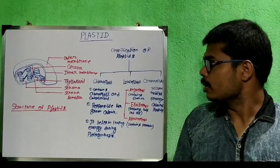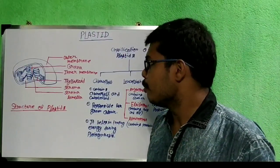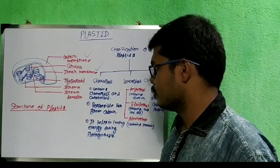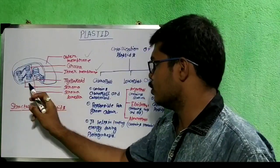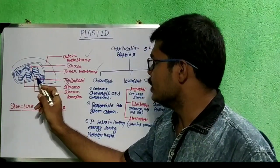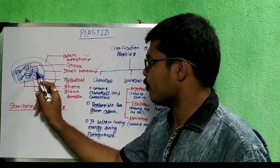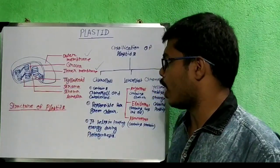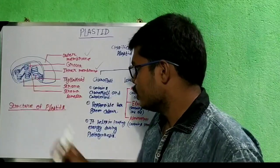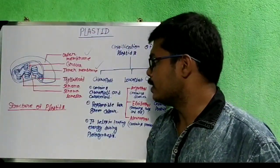Now I will discuss about the plastid. I have drawn a diagram of plastid. This plastid is a double membranous structure like mitochondria and nucleus. It has one outer membrane and another inner membrane. The place inside that membrane is known as stroma. In this stroma region, some sac-like structures are there. Each of these sacs are known as thylakoids. When these thylakoids are arranged one after another, they form a stack-like structure known as grana. Two grana are joined to each other by a lamellae known as stroma lamellae.